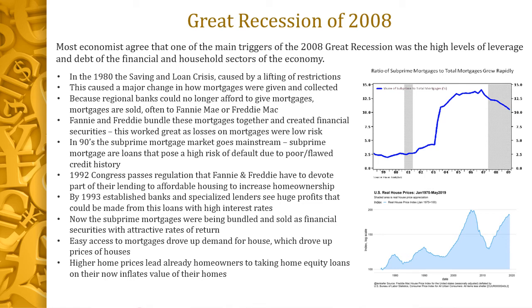Higher home prices did something else interesting: people who already owned a home were being talked into taking home equity loans because of their home's inflated value. Maybe they bought their house for $100,000, but because housing prices were going up so much, they could sell it for $350,000 — a $250,000 increase, which was not uncommon. People were told, 'Why don't you take some of that money and go on vacation or buy a new car?' So people were taking these second mortgages and equity loans. The problem was the house wasn't really that valuable — the value was inflated.